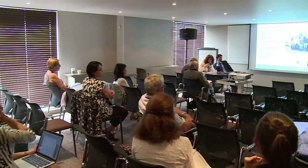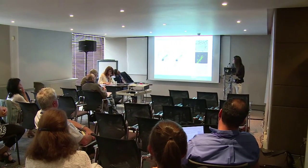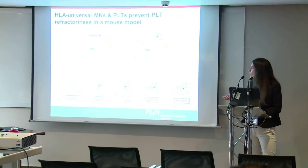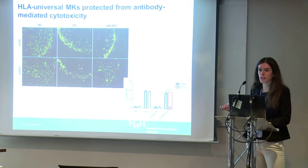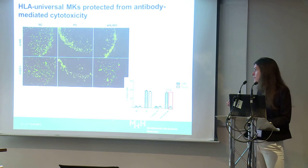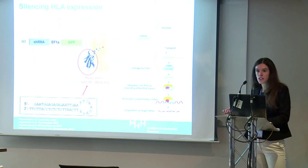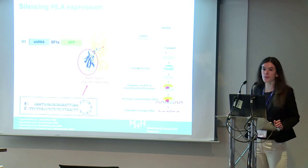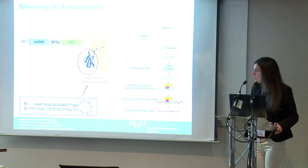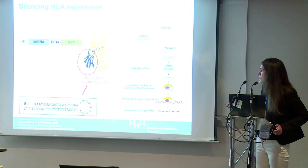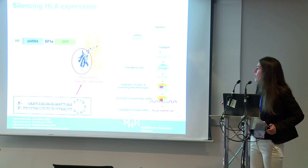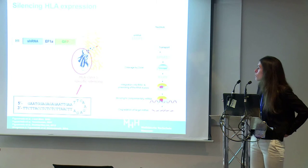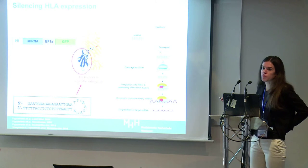Regarding the lentiviral vector: we have different lentiviral vectors. The one used for animal models is the PLVTHM from the Toronto Lab in Switzerland. We also have a GMP-compatible vector obtained in cooperation with Axel Schambach from the Hannover Medical School. This vector integrates into a safe harbor and contains a suicide gene. It uses an H1 promoter to drive shRNA expression and an EF1-alpha or short EF1-alpha promoter to drive expression of the reporter or, in the GMP version, a suicide gene.